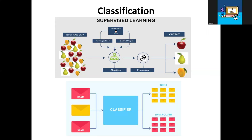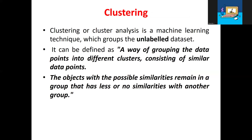In today's session, what we have discussed is: what is supervised learning, unsupervised learning, and semi-supervised learning in the machine learning process; how prediction and training is done, which we have seen with a diagram; and in supervised learning, we have seen an example of algorithmic classification — how we train data and how it predicts. I hope you understand what is supervised, unsupervised, and semi-supervised. Thank you.